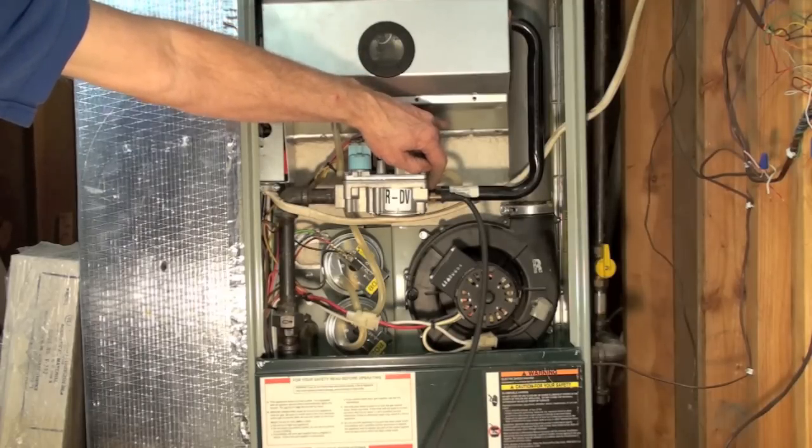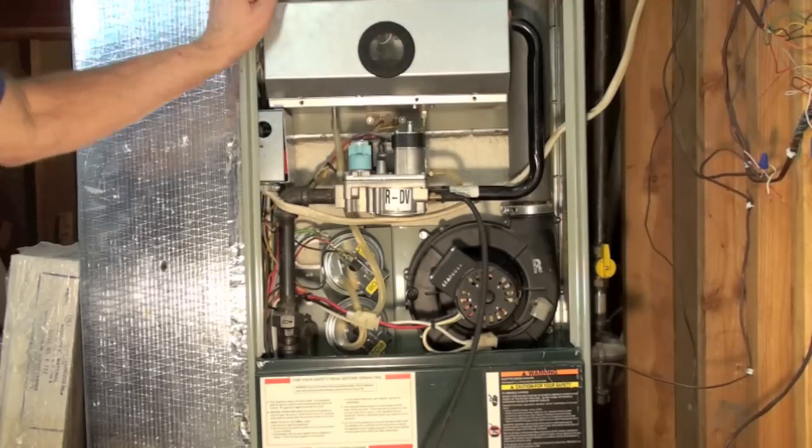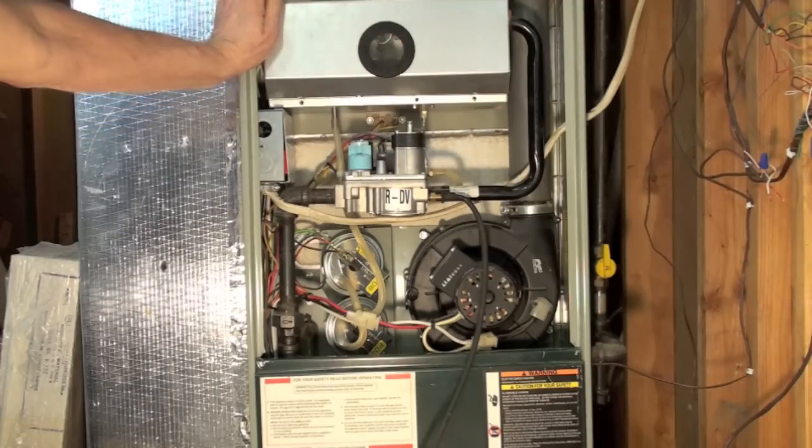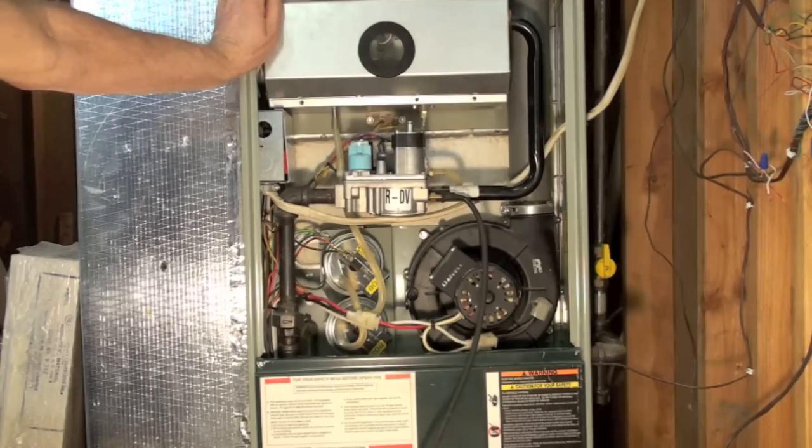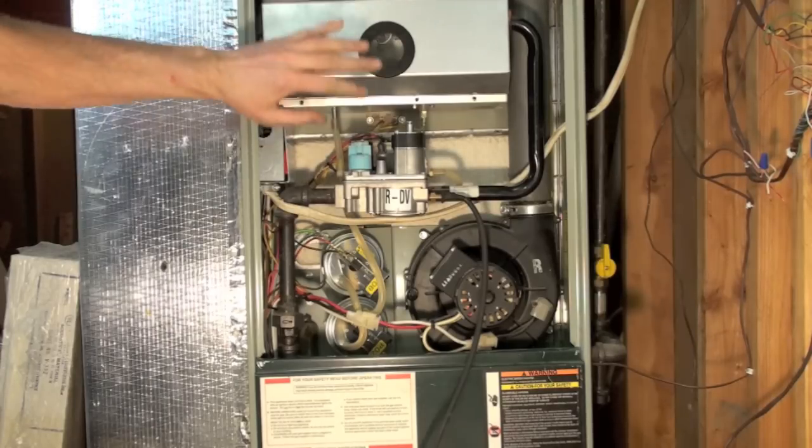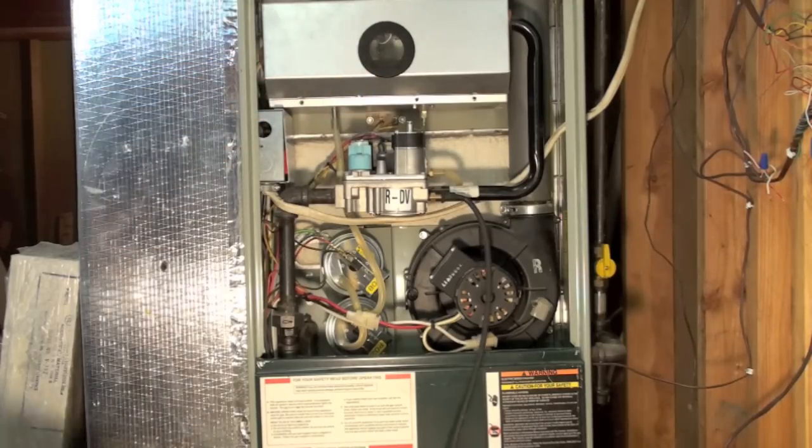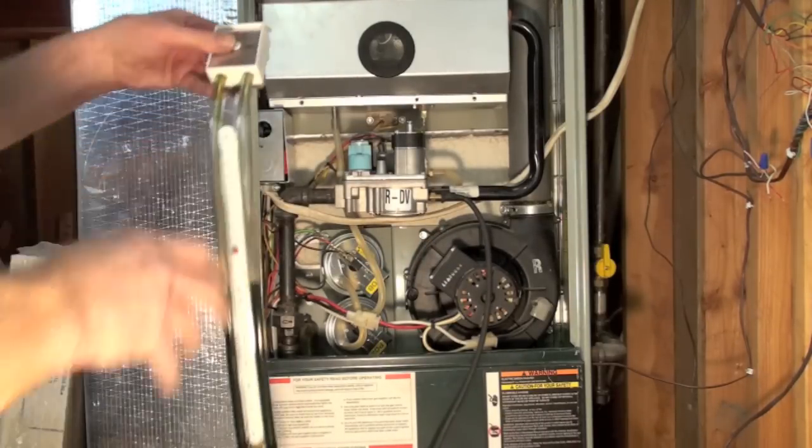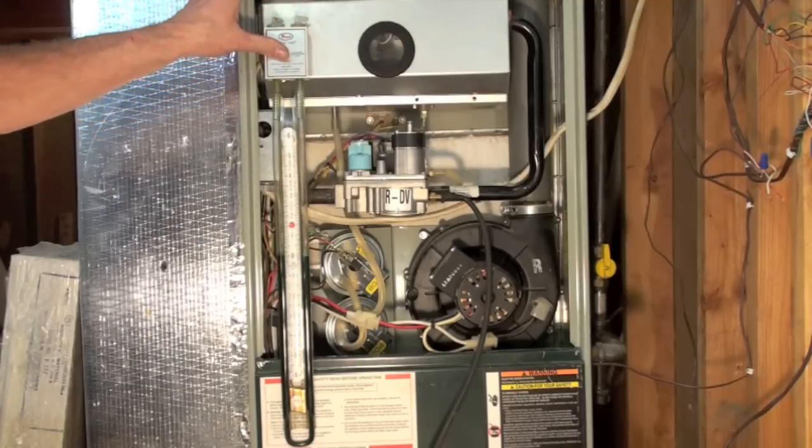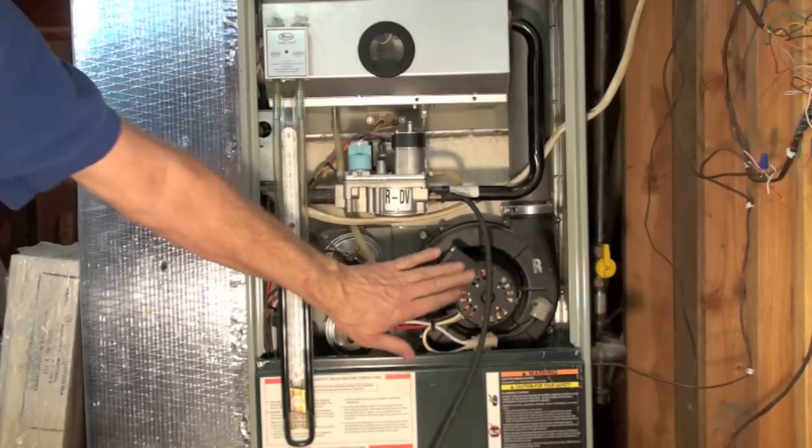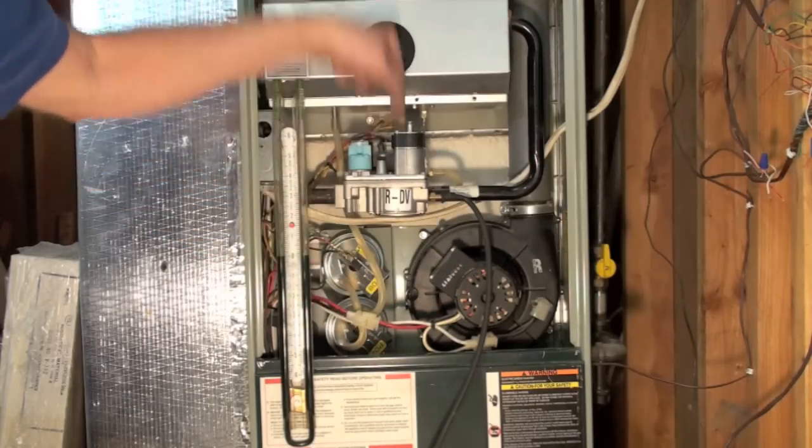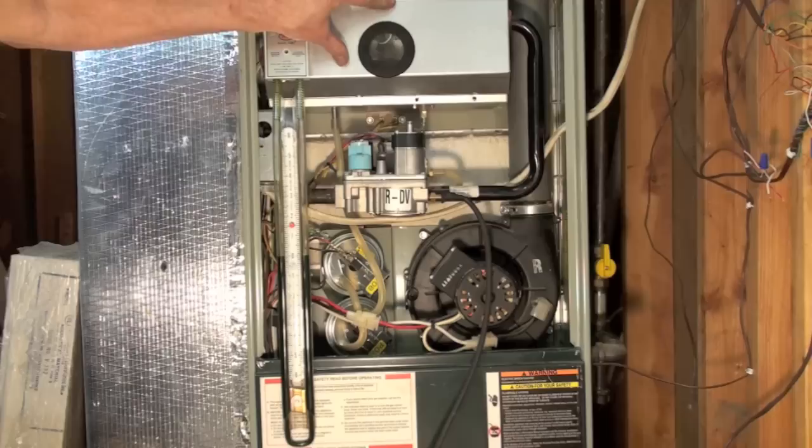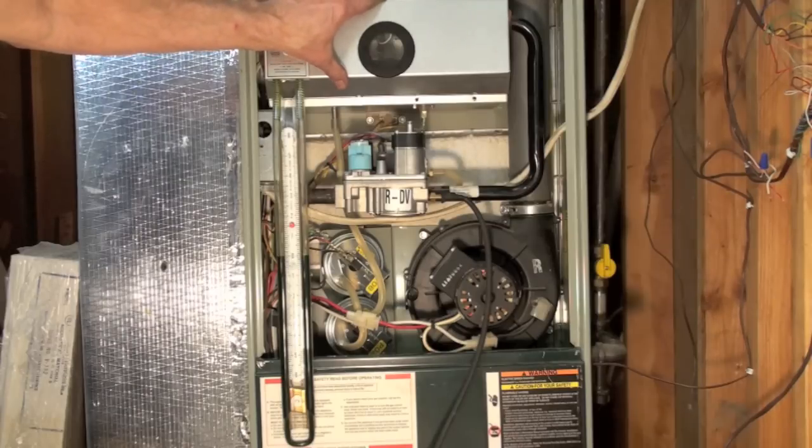You should still be reading the 1.4 because that's what this appliance wants in low fire. So don't let that think that either this gauge or your slack tube is somehow out of calibration. It is not. It is actually the negative pressure that this inducer pulling down through the heat exchanger is taken on this combustion chamber.